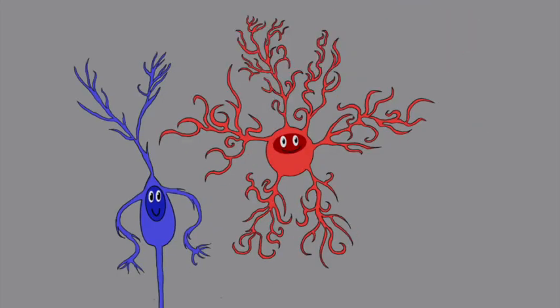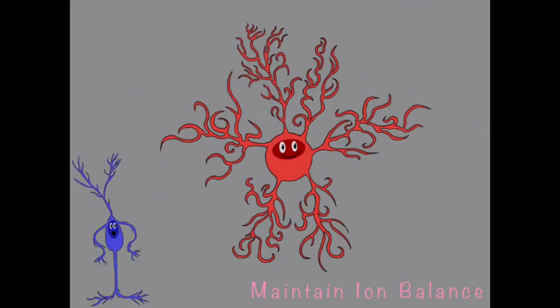Now, Annie Astrocyte has a bunch of functions in the brain, like ion homeostasis, which is what we just talked about. She helps with synapse formation, transfers healthy mitochondria, which you know as the powerhouse of the cell, back to neurons. She helps with synapse elimination and is a major component of the blood-brain barrier. She is also a major player in the glial scar.